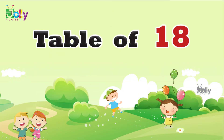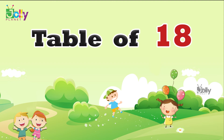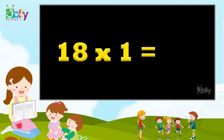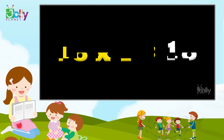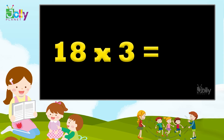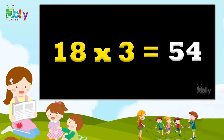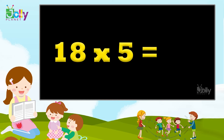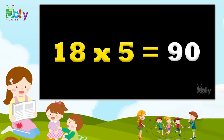Table of 18. 18 1s are 18. 18 2s are 36. 18 3s are 54. 18 4s are 72. 18 5s are 90.